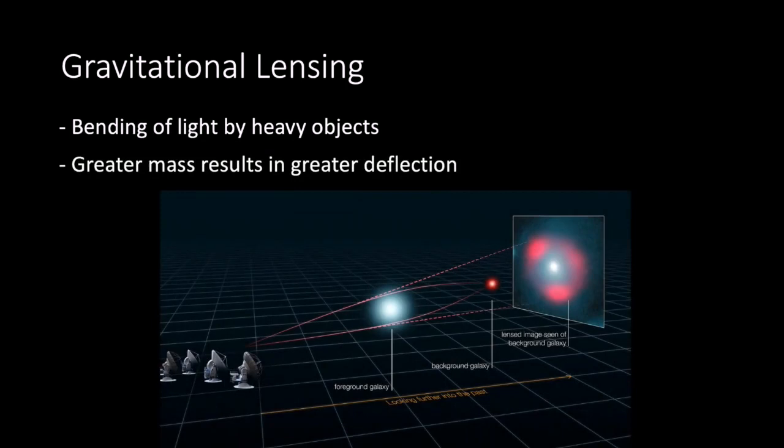In the diagram shown, we can see that the massive galaxy's distortion of the light from the distant galaxy causes two images to be seen by the telescope.